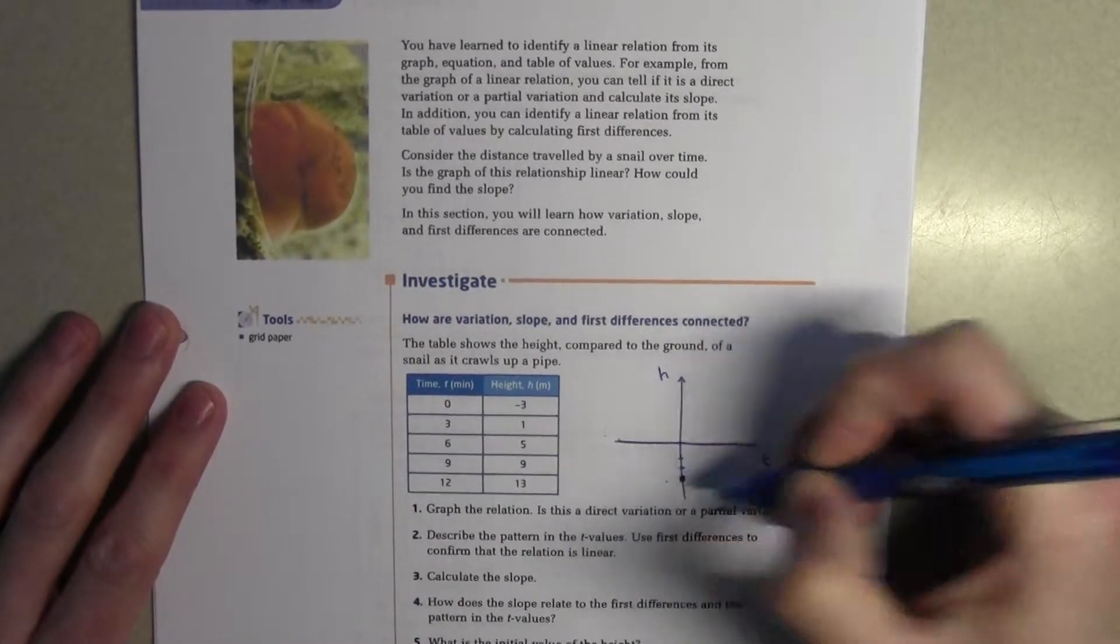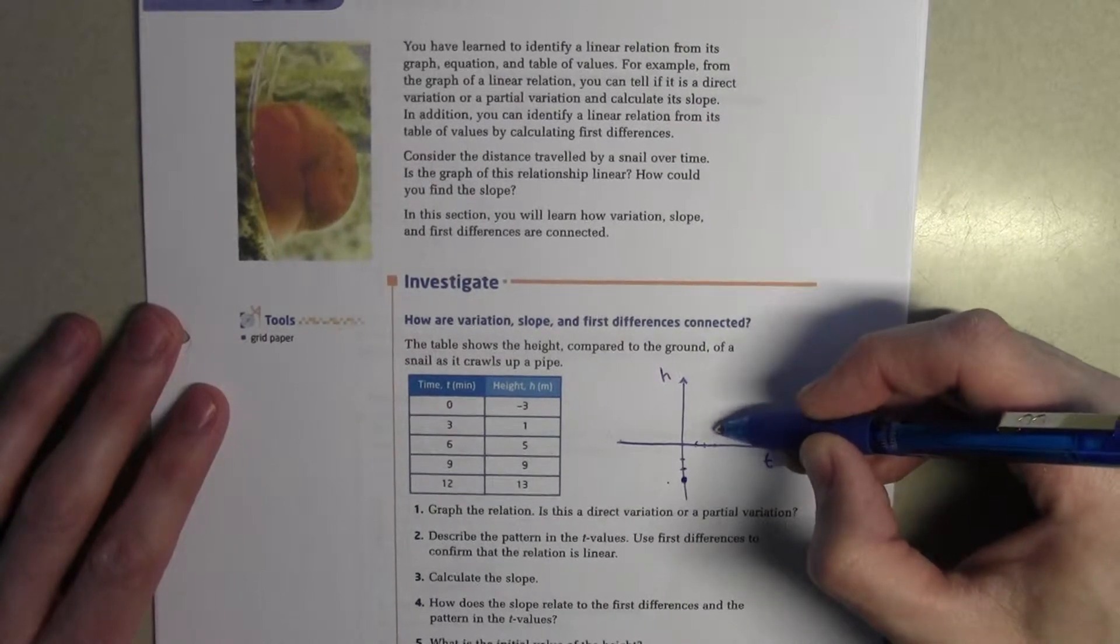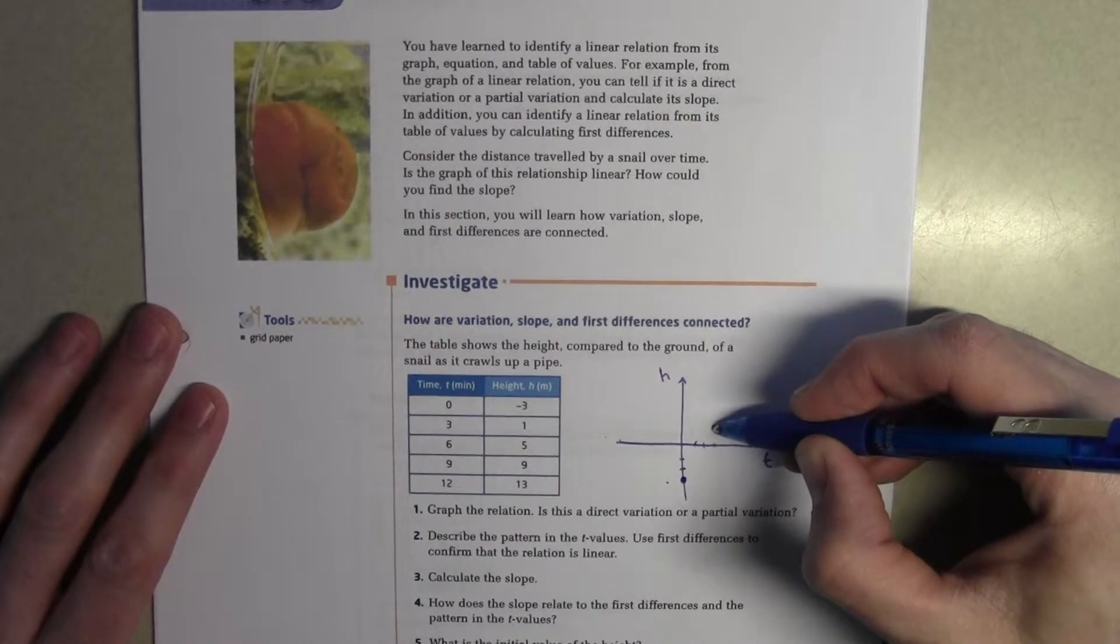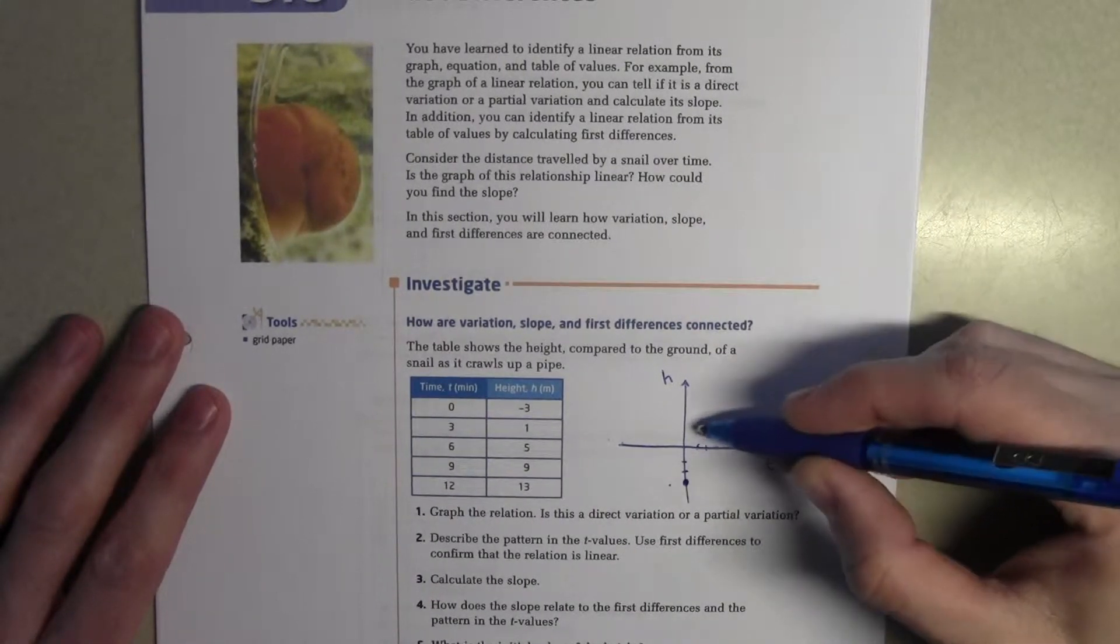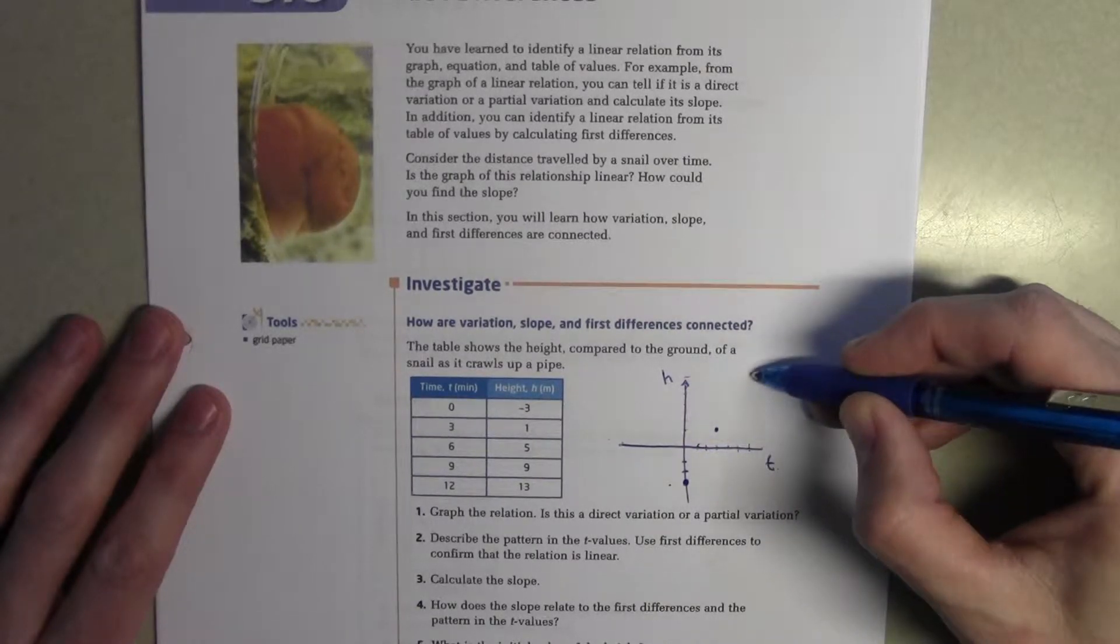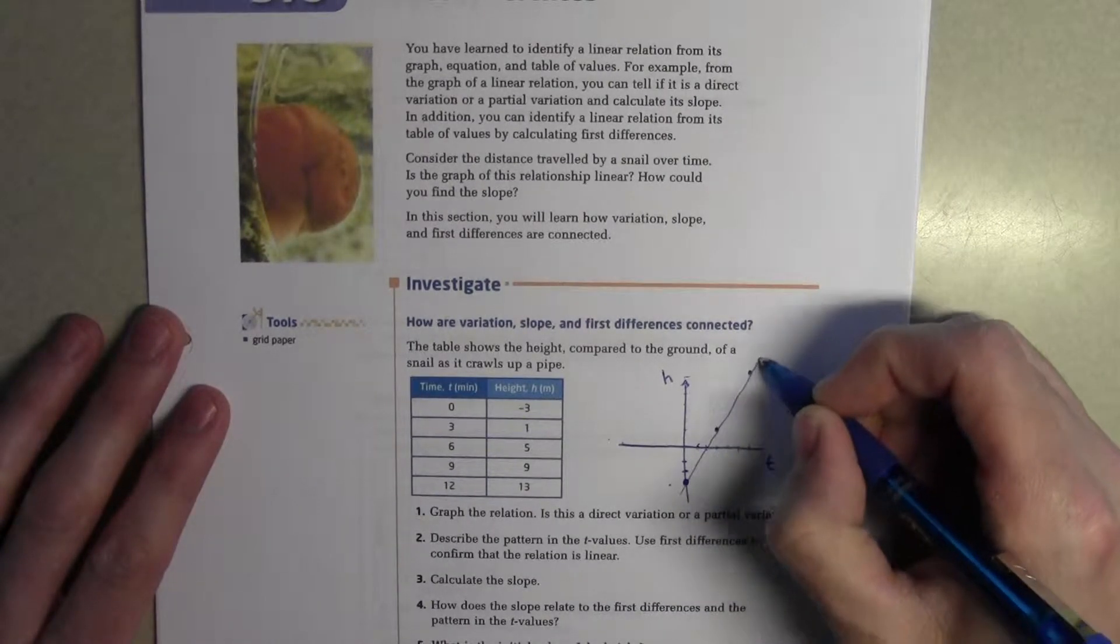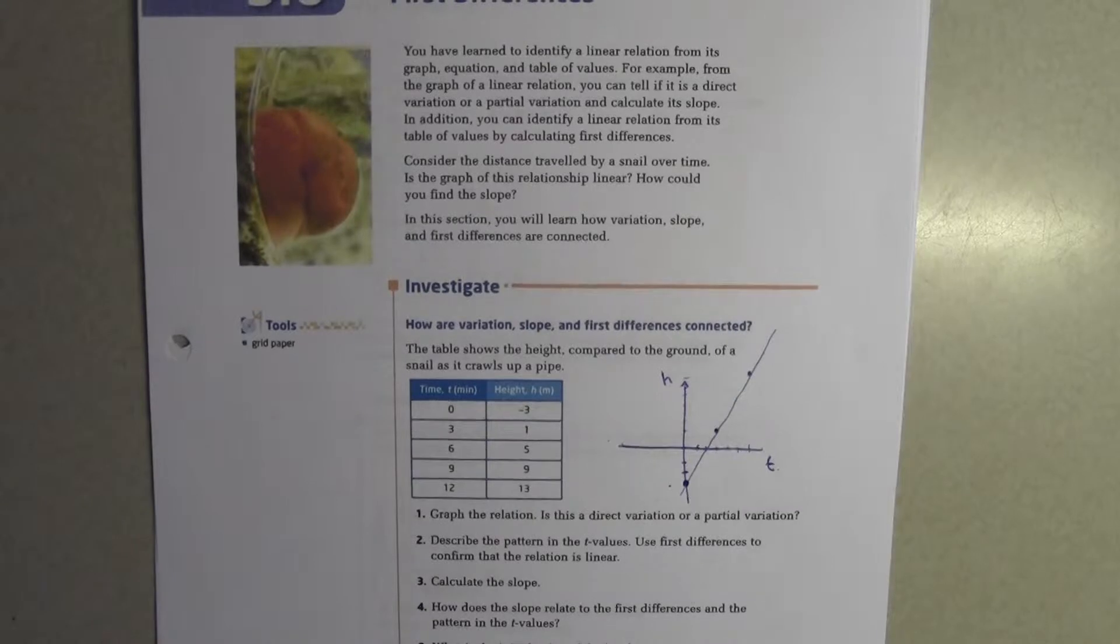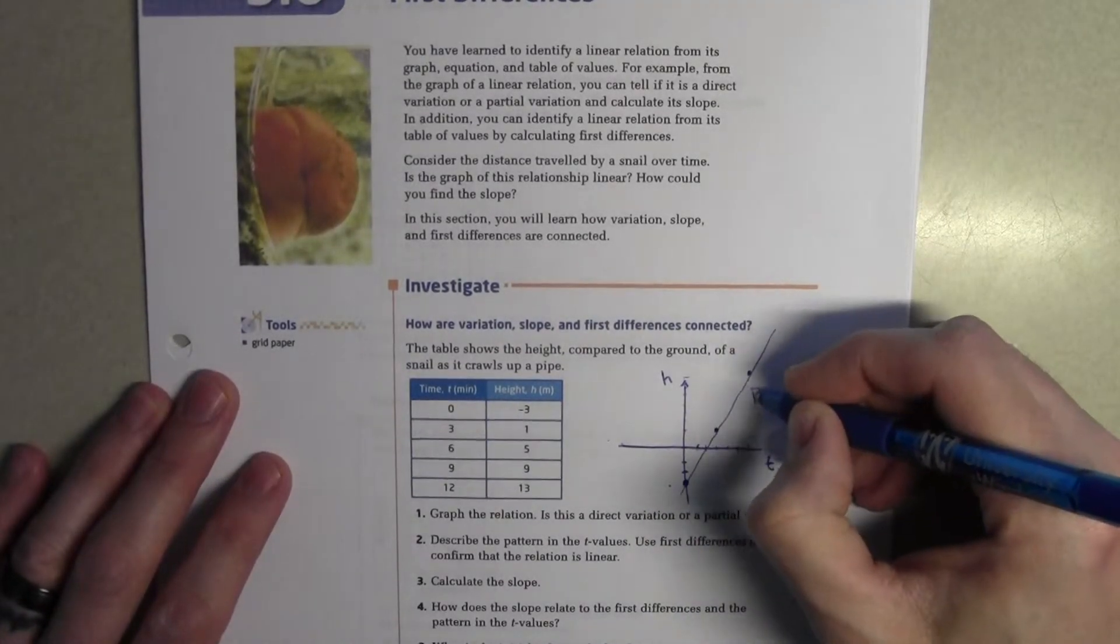So, here is our first point. Next point, we have time of three, a height of one. Time of six, a height of nine. And we get this kind of graph happening. Okay, that's easy enough. Is this direct or partial? Well, because it doesn't cross the origin at zero, zero, we know it has to be partial.